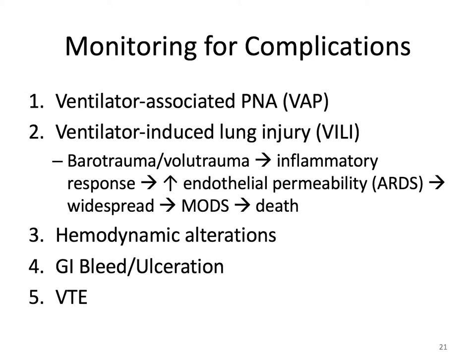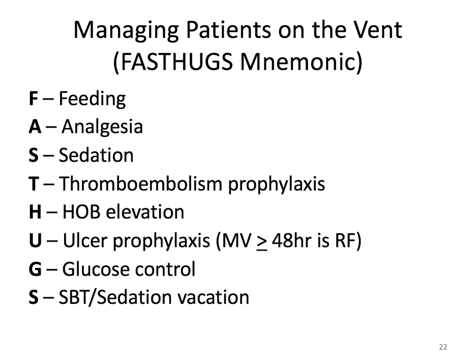One of the key jobs as the bedside nurse is to monitor the patient for potential complications and implement preventative measures. For ventilator-associated pneumonia, oral care every two to four hours per institutional policy significantly reduces the risk of VAP. VTE prophylaxis with heparin or lovenox is essential in preventing clot formation, and all patients on a ventilator require a PPI such as Protonix to reduce the risk of GI bleed and ulceration. A helpful mnemonic is FAST HUGS: Feeding, Analgesia, Sedation, Thromboembolism prophylaxis, Head of bed elevation at 30 to 45 degrees, Ulcer prophylaxis, Glucose control, and Spontaneous breathing trials and sedation vacation.